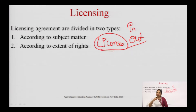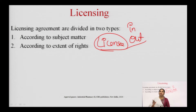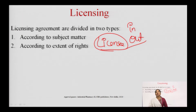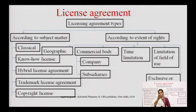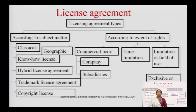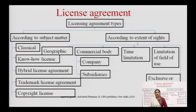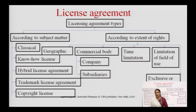According to the subject matter, licensing is divided into five types: classical license, know-how license, hybrid license agreement, trademark license agreement, and copyright license. According to the extent of rights, it is divided into five types: geographical, commercial bodies, time limitation, limitation of field of use, and exclusivity.